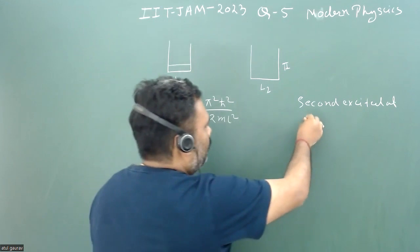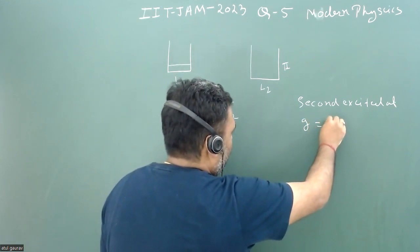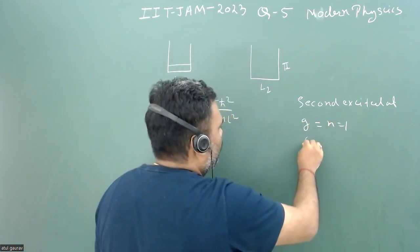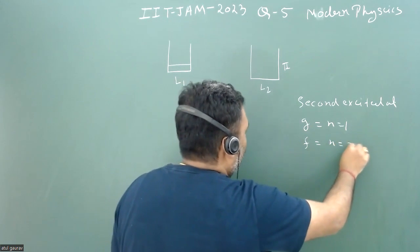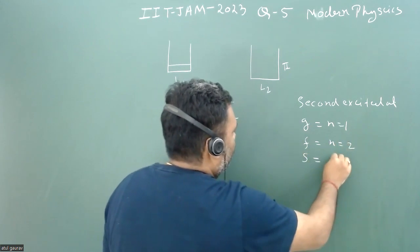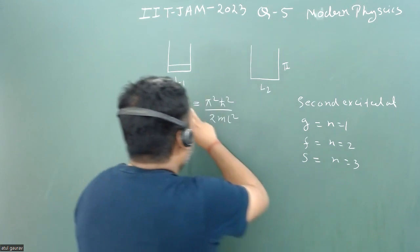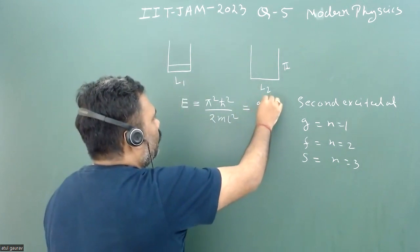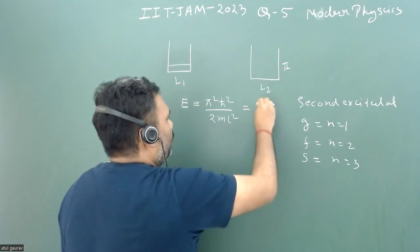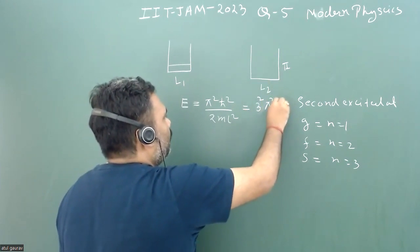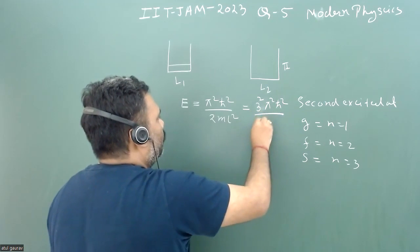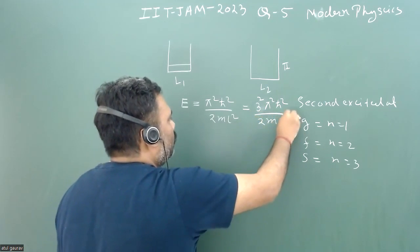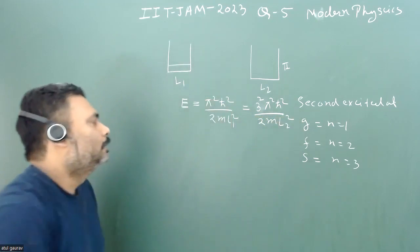What is the meaning of second excited state? Ground state means n=1, first excited means n=2, and second excited means n=3. So this energy equals 9π²ℏ²/(2mL2²), or 3²π²ℏ²/(2mL2²). Here we have L1².